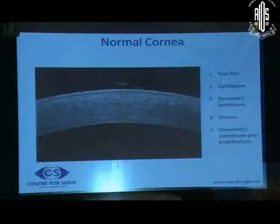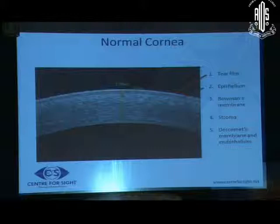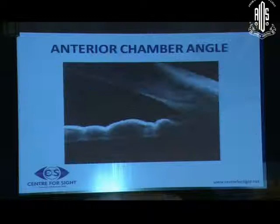You can visualize the detailed anatomy of the cornea starting from the tear film, epithelium, Bowman's membrane, stroma, Descemet's membrane, and endothelium. One can also visualize the detailed morphology of the anterior chamber angle.